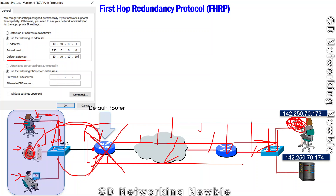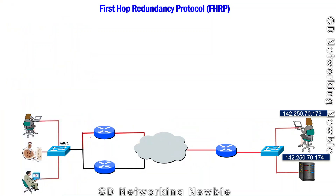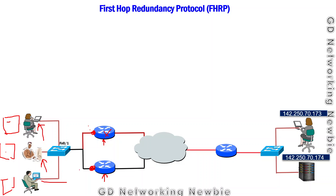In case of first hop failure, one solution is to have two or three default routers instead of one. If the first router fails, we can go to all machines and configure the default gateway information of the second router. But the challenging issue is that if we have hundreds of computers, we need to configure all those nodes with the new default gateway information.